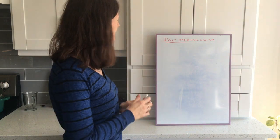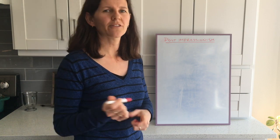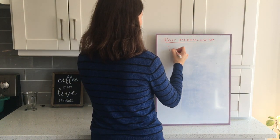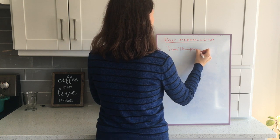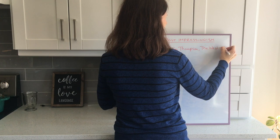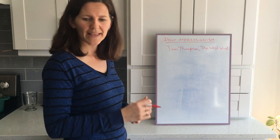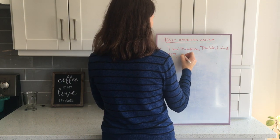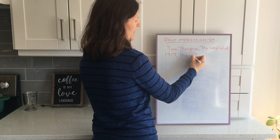We're going to get going right away with our first image under Post-Impressionism, which is a painting by Tom Thompson. So what we have is Tom Thompson's The West Wind. This is a very famous Canadian painting, painted in 1917, and it's a very fine example of Post-Impressionism.